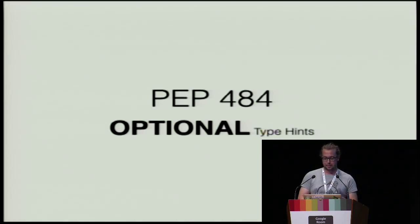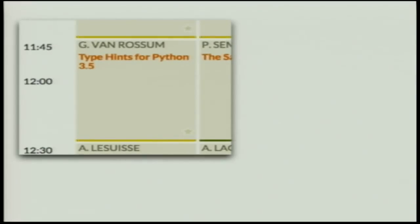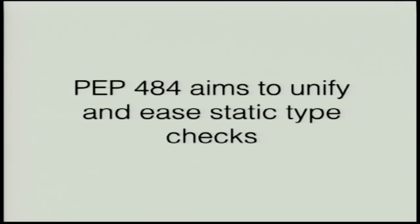There's also PEP 484, which defines optional type hints. Since type annotations were introduced in 2006, many third-party libraries started using them in different ways. PEP 484 aims to establish a standard way of doing type hinting — similar to what WSGI introduced for web frameworks, providing a baseline for tools to work from. As the authors state, Python will remain a dynamically typed language and they have no desire to make type hints mandatory.